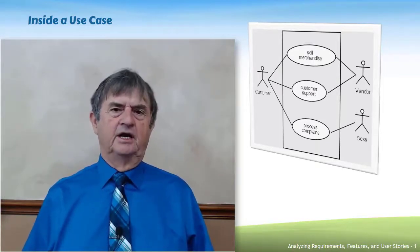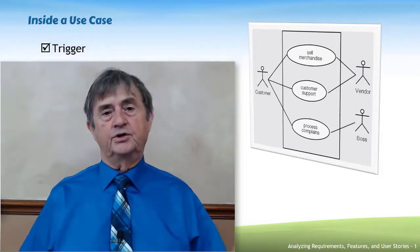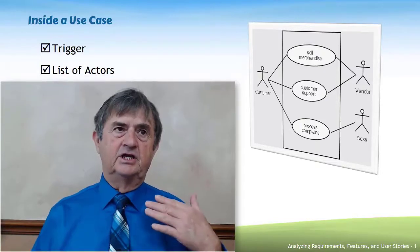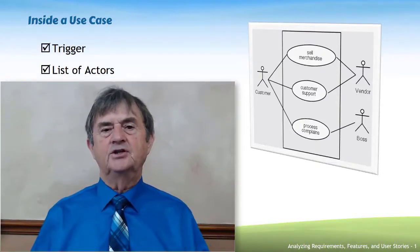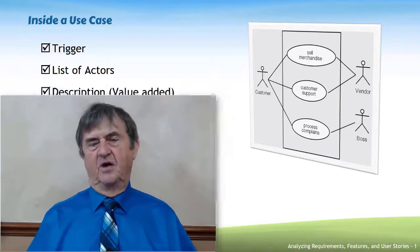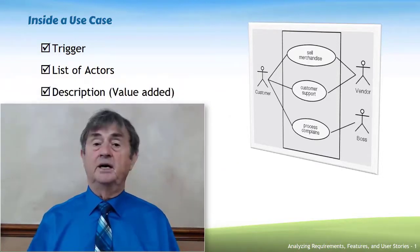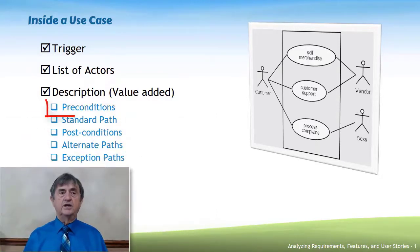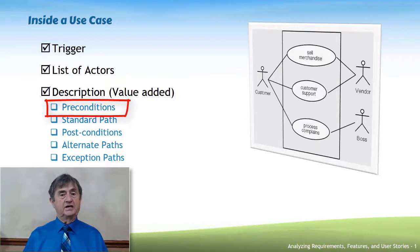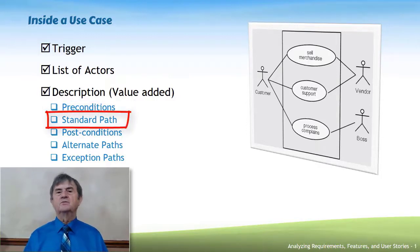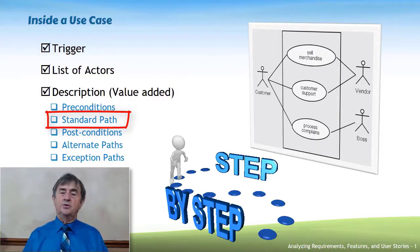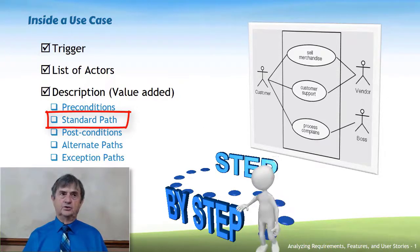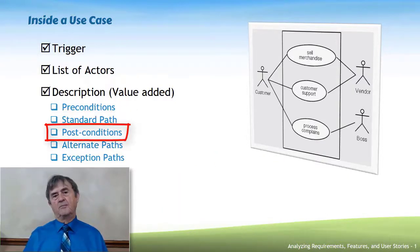Fundamentally, just to give you the bare bones: a use case describes a trigger which causes the use case to become active. It lists the actors — the people or other applications involved. It has a brief description, really about the business value the use case provides. And it has a listing of all of the preconditions — situations that have to be true or conditions that have to be met before this use case can work. Then there's a standard path, which is the sequence of events and interactions that happen under normal circumstances.